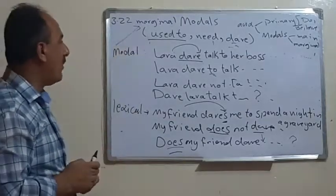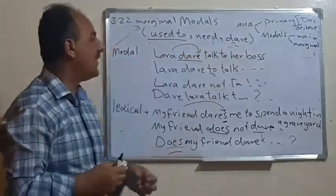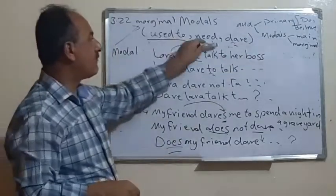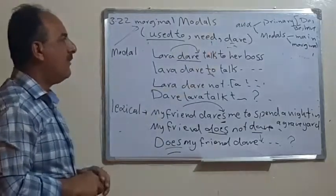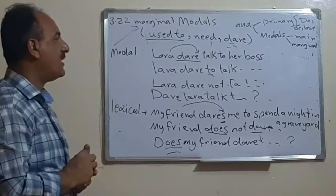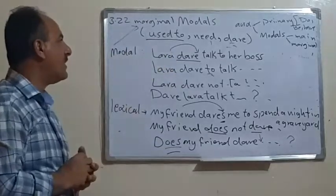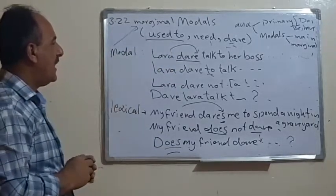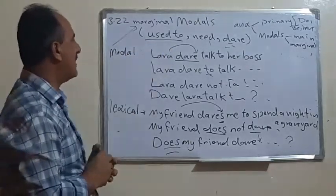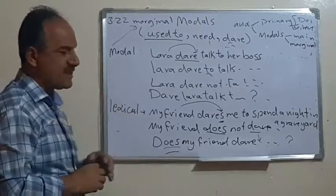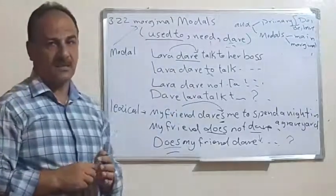To summarize the marginal models: we have three — the first is 'used to', the second is 'need', and the third is 'dare'. Both 'need' and 'dare' can be lexical or modal auxiliaries depending on usage. For 'used to', the present form is simply 'use', but 'used to' as a marginal modal doesn't have a present equivalent. Hopefully this is clear; if you have any questions, please ask. Thank you.